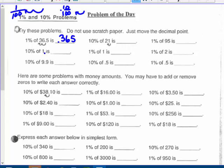10% is like moving 1 to the left and you'd get 0.1. 10% of 9.9, 1 to the left, dividing by 10, would give you 0.99. 10% of 21, dividing by 10, you'd get 2.1.